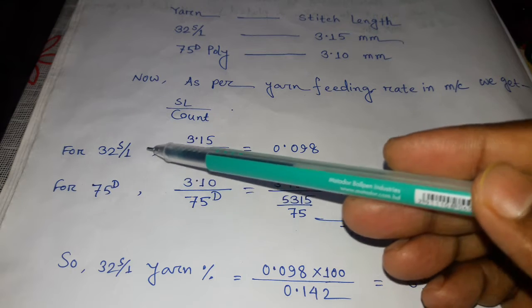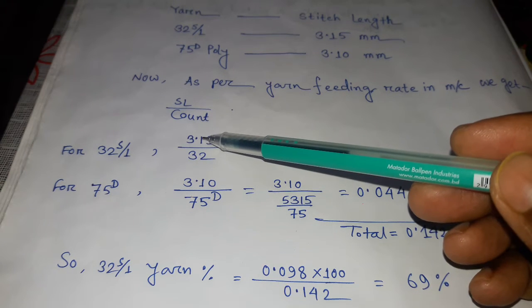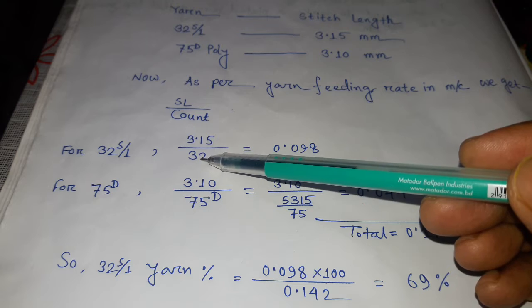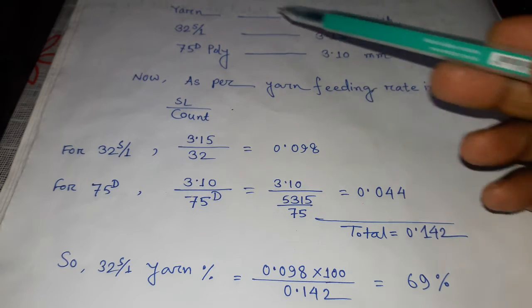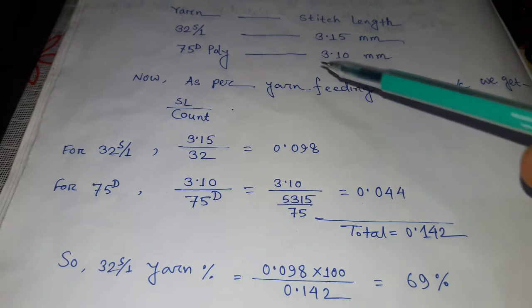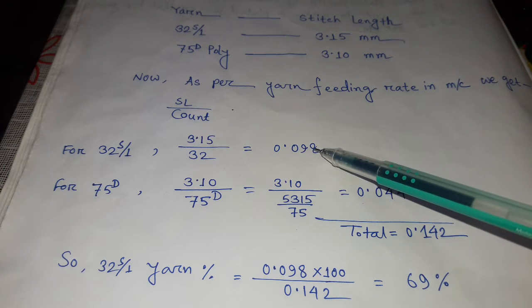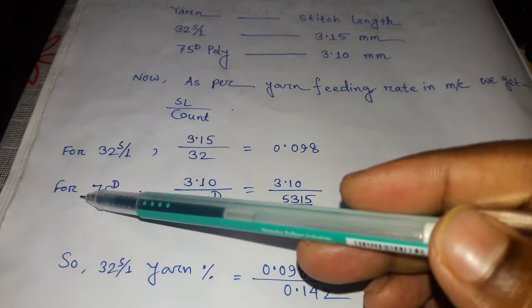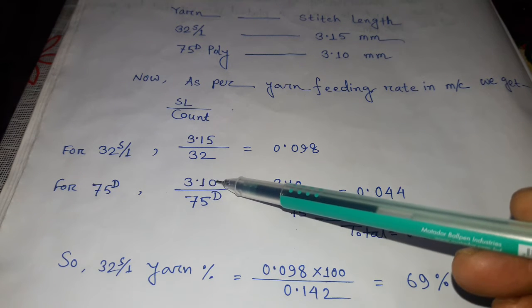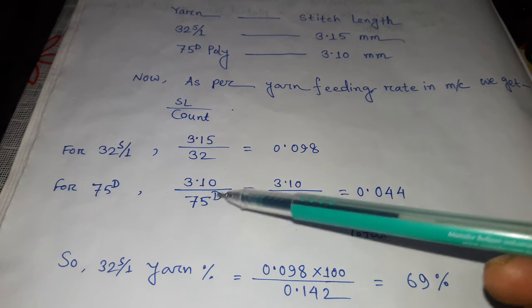For 32 single, stitch length 3.15 divided by count 32 single equals 0.098. For 75 denier polyester, 3.10 stitch length divided by 75 denier polyester...